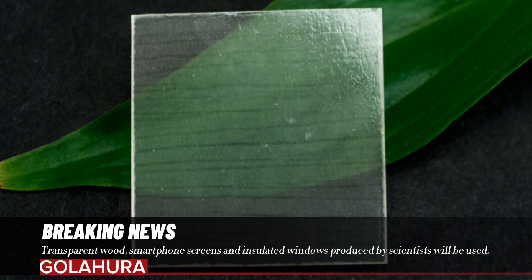This skeleton is still opaque because the cell walls bend light to a different degree than the air in the cell pockets. This value is called the refractive index. Filling the air pockets with a substance such as epoxy resin, which bends light to a similar degree as the cell walls, makes the wood transparent.